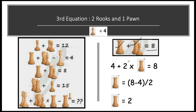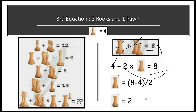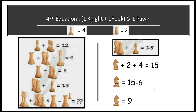In the third equation: one rook + another rook + one pawn = 8. Substituting pawn = 4: 4 + 2 × rook = 8, so rook = (8 − 4) ÷ 2 = 2. Therefore, rook = 2.